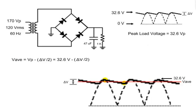That means the average voltage is the peak voltage minus one half of the ripple voltage. All that is left to find is the peak-to-peak ripple voltage. We can then plug it into the equation and find the average load voltage.